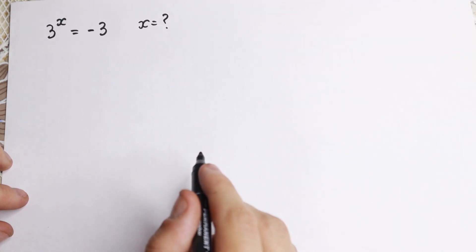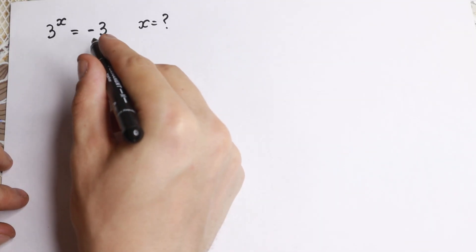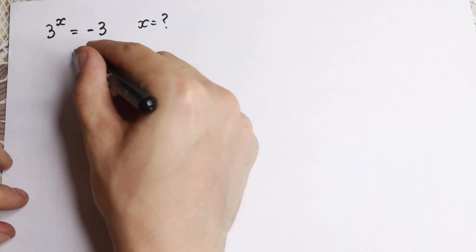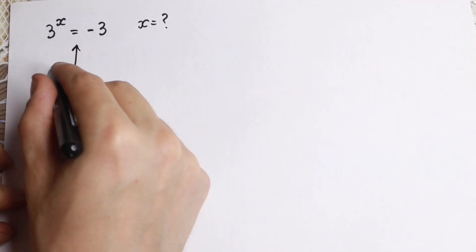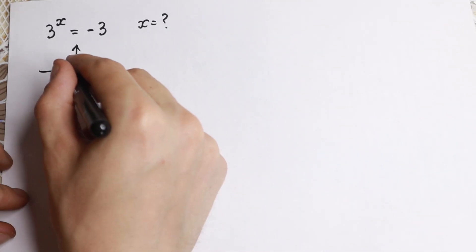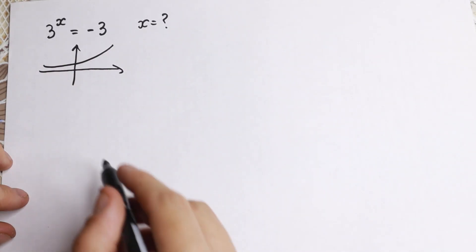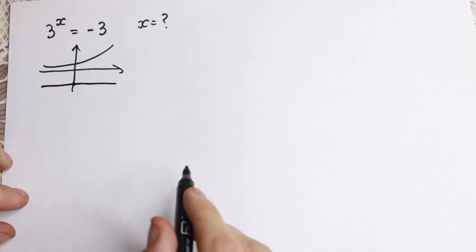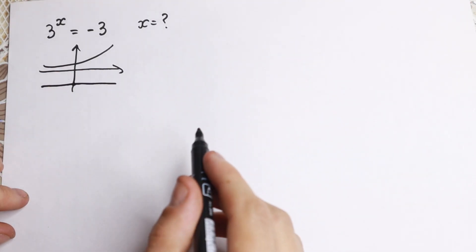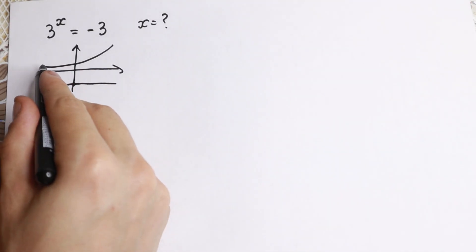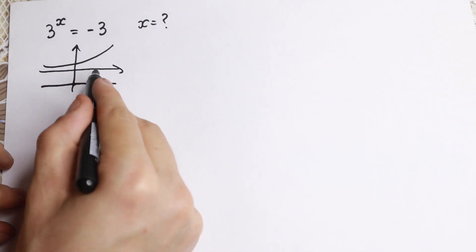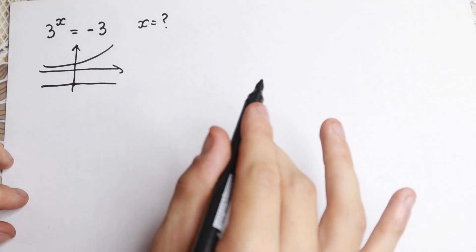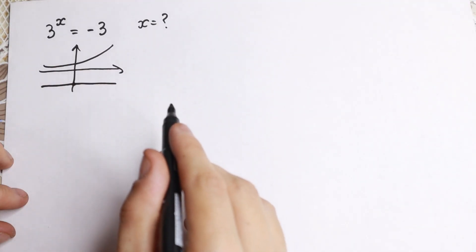On the first side, this equation has no roots because we have a minus right here. And if we draw a quick graph, we have 3 to the x — our exponential function — and minus 3, which is a constant. As you can see, there is no point of intersection, so no point of intersection using graph methods.